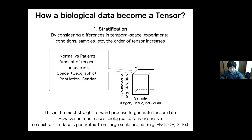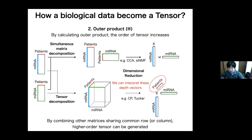The second way to generate tensor data is outer product. For example, if we have two matrices, and the first matrix is mRNA times patients, and the second matrix is miRNA times patients, many dimensional reduction methods such as CCA or scINMF can be applied. The two matrices are simultaneously decomposed to the lower dimensions. Likewise, we can perform tensor decomposition against these matrices. Calculating outer product, the third-order data about patients can be generated. And using tensor decomposition algorithm, we can interpret these depth vectors.